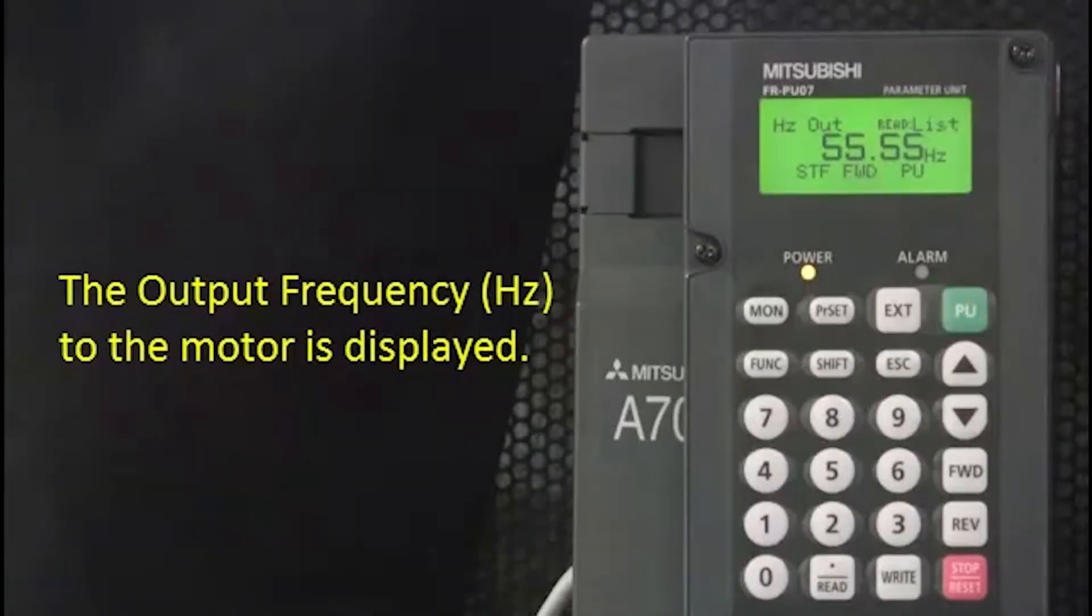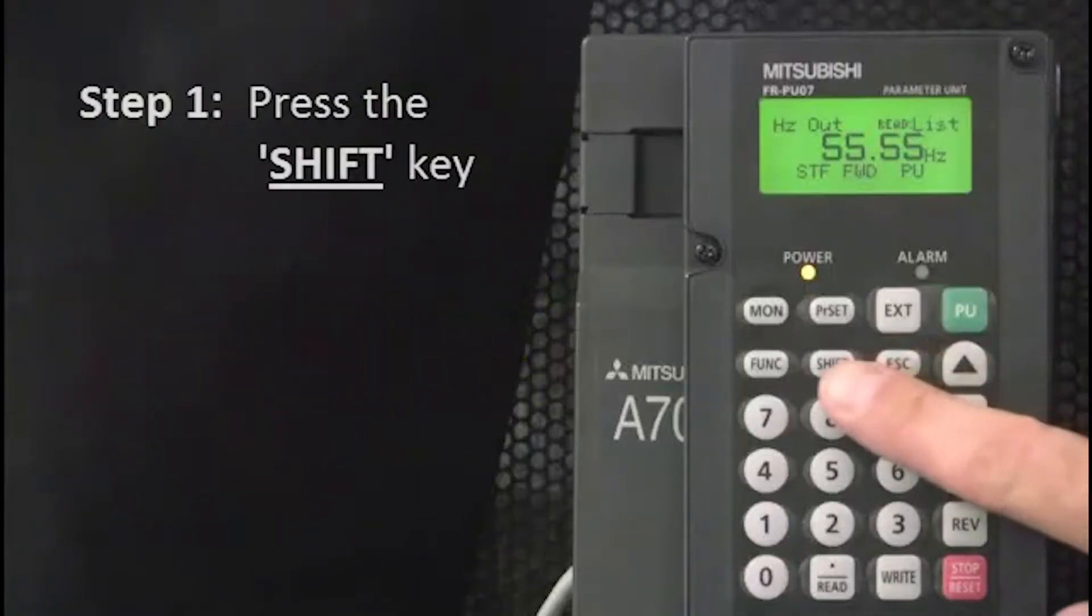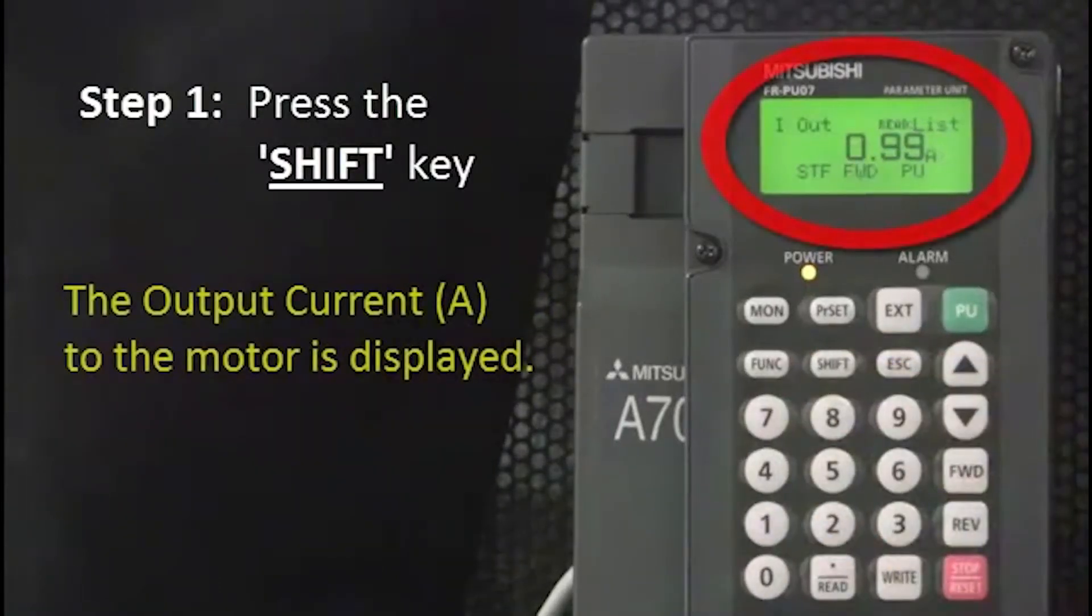At first, the output frequency in hertz to the motor is displayed. The first step is to press the shift key. The output current in amps to the motor is displayed.